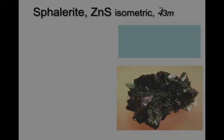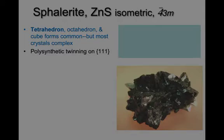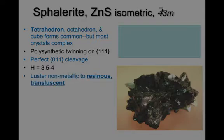First, let's look at sphalerite, which is zinc sulfide. It's an isometric mineral, rarely forms tetrahedrons, and even more rarely octahedrons and cubes. Most cases, as in the lower right, it forms rather complex crystals. It has polysynthetic twinning on the (1,1,1) plane, and a perfect cleavage on (0,1,1). Hardness is 3.5 to 4, which is intermediate for sulfides, and its characteristic feature is that the luster is non-metallic to resinous and translucent.